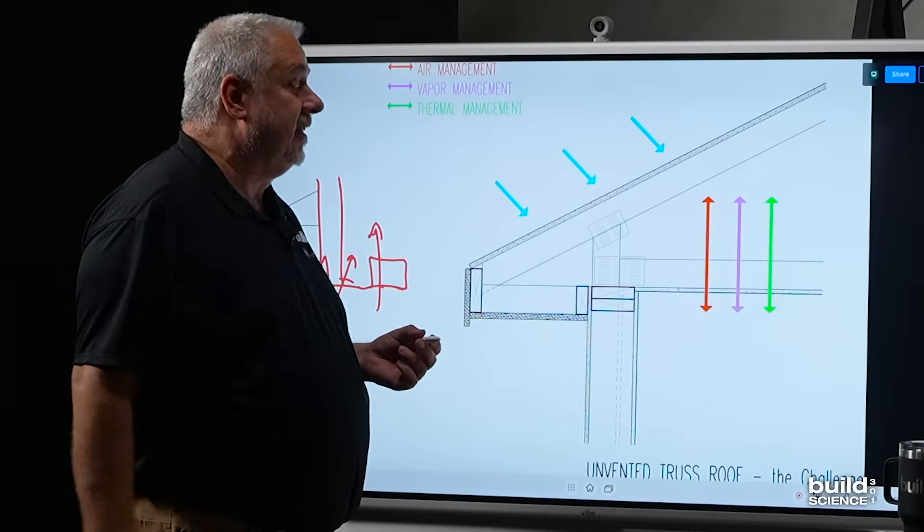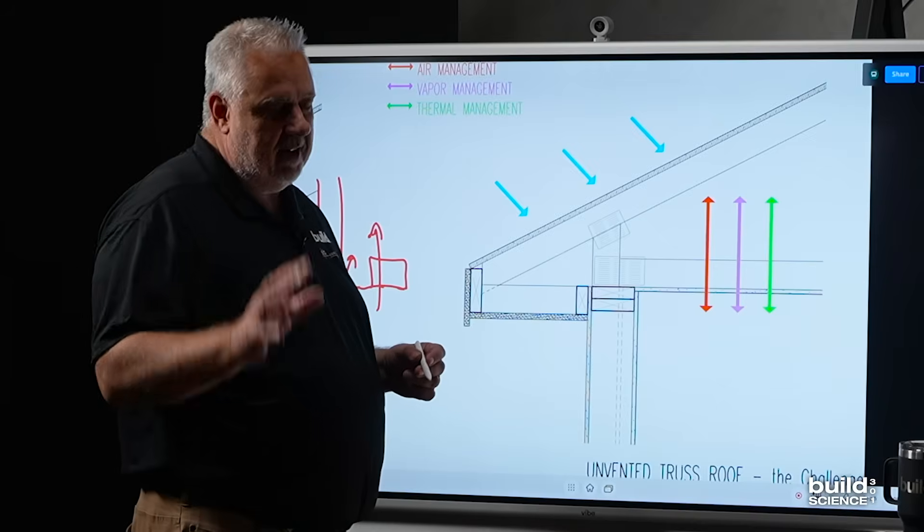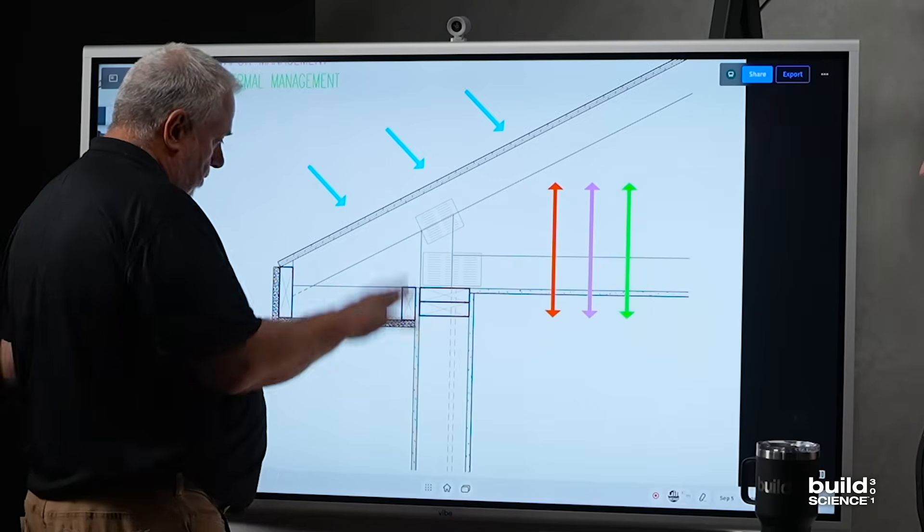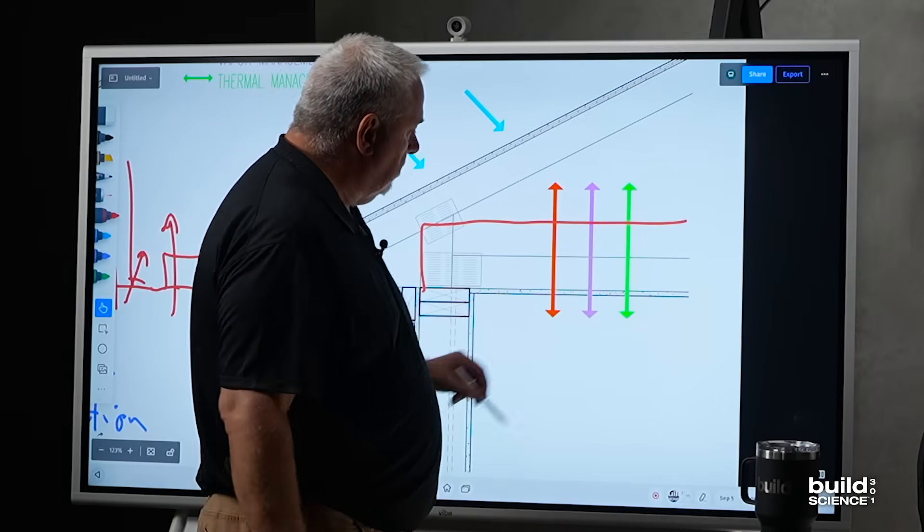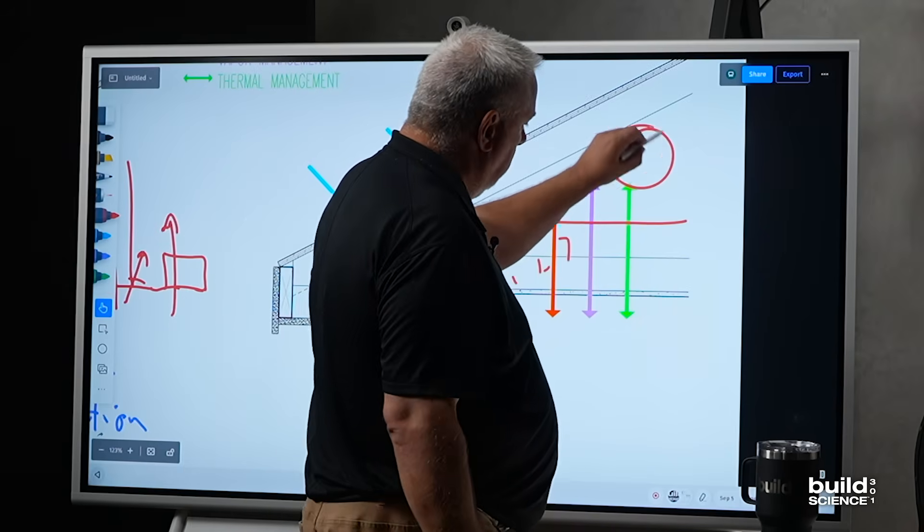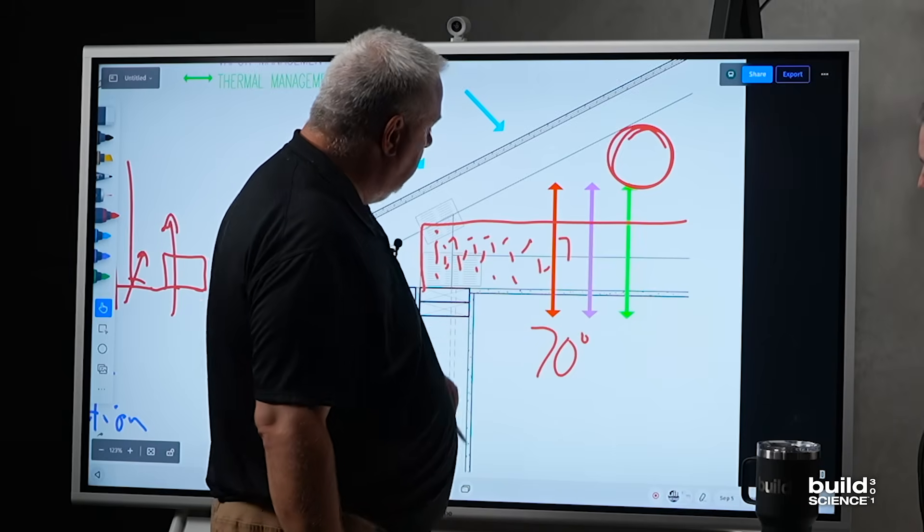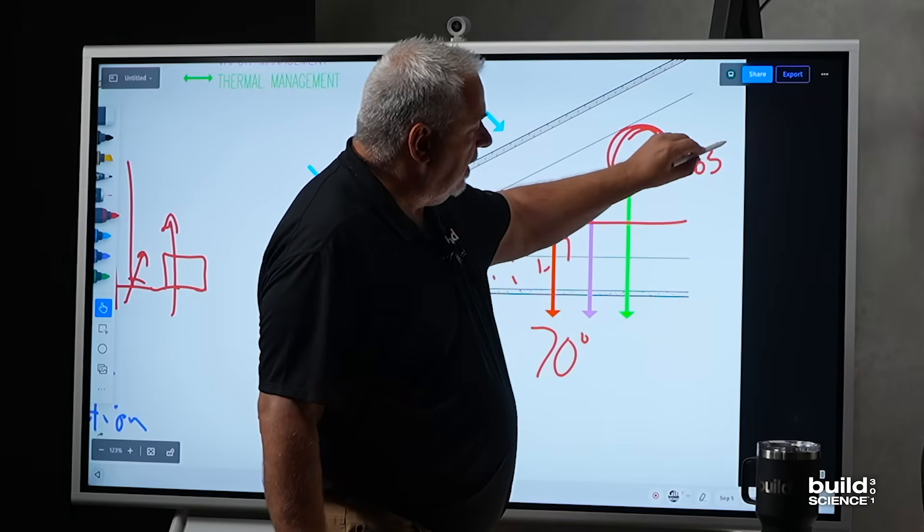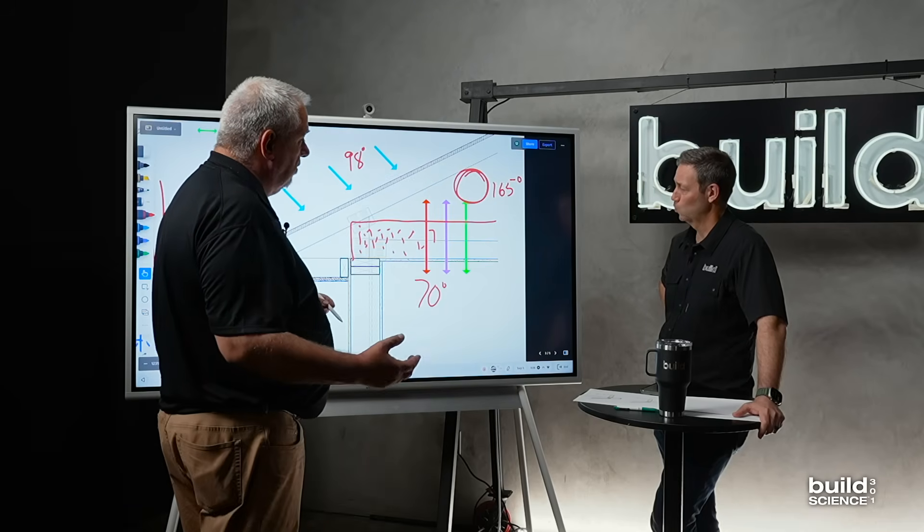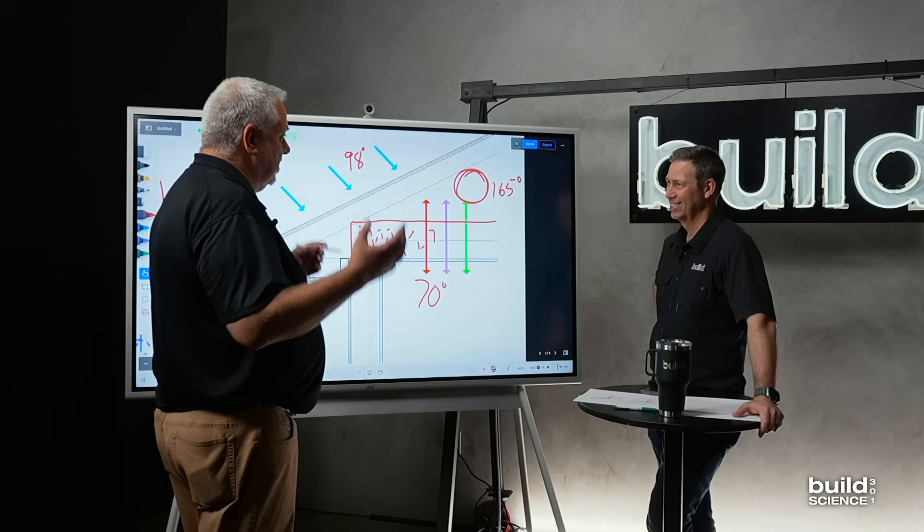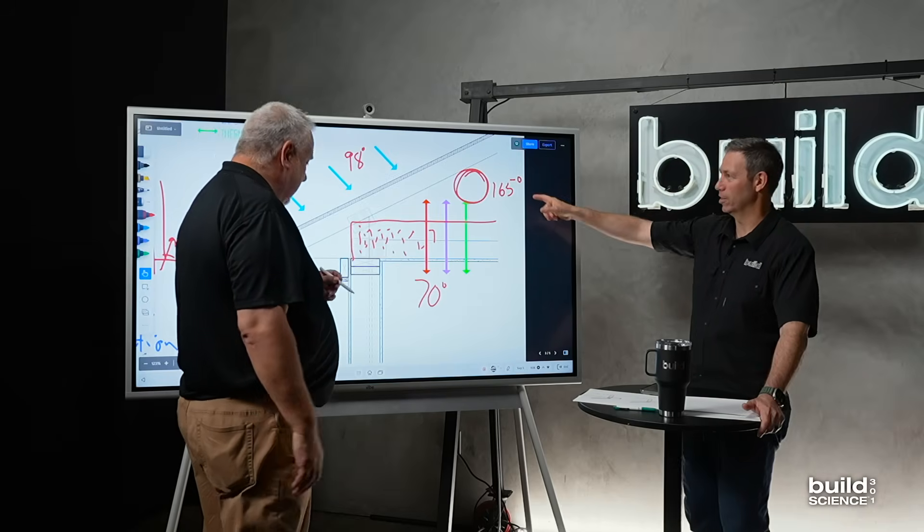I'm going to talk about the idiocy of putting ductwork into a vented attic space. So we have insulation there, and then we'll put a piece of ductwork in here. Houston, 70 degrees here, 98 degrees there. The attic was 165 degrees. We measured it. And it's like if you're up there for five seconds, you're already starting to sweat. That's the beef jerky setting on my dehydrator, 165 degrees.